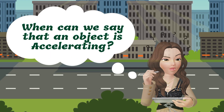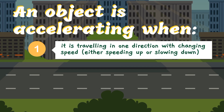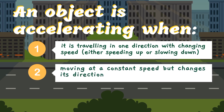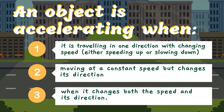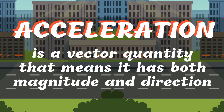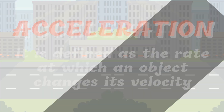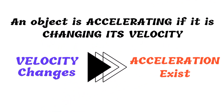An object is accelerating when: first, it is traveling in one direction with changing speed, either speeding up or slowing down. Second, if an object is moving at a constant speed but changes its direction. Third, when the object changes both its speed and its direction. Acceleration is a vector quantity, meaning it has both magnitude and direction, and it is defined as the rate at which an object changes its velocity. Therefore, an object is accelerating if it is changing its velocity, and if there is a change in speed or direction, there is a change in velocity.